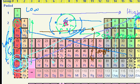In general, things in a lower period will be larger than most things in a higher period, regardless of group. Within a group, the higher the period number, the larger the atom. Within a period, the more protons you have, the smaller the atom. In the next few videos, we'll start with bonding.